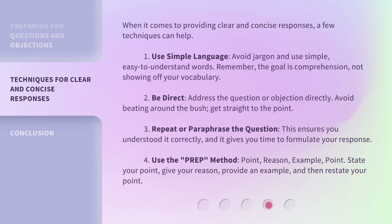When it comes to providing clear and concise responses, a few techniques can help. 1. Use simple language. Avoid jargon and use simple, easy-to-understand words. Remember, the goal is comprehension, not showing off your vocabulary. 2. Be direct. Address the question or objection directly. Avoid beating around the bush — get straight to the point. 3. Repeat or paraphrase the question. This ensures you understood it correctly, and it gives you time to formulate your response.